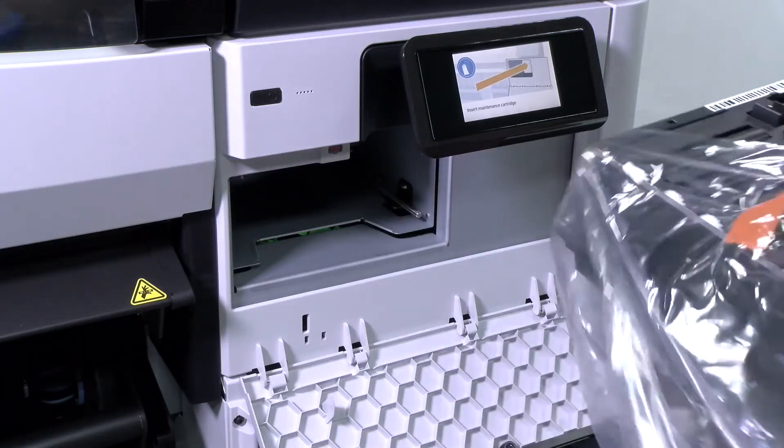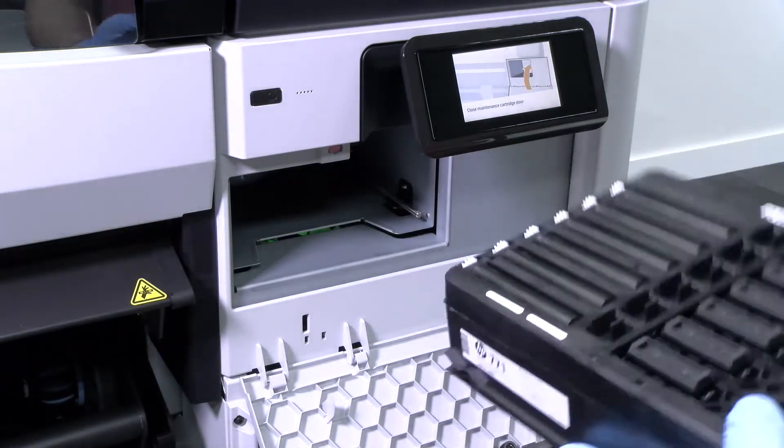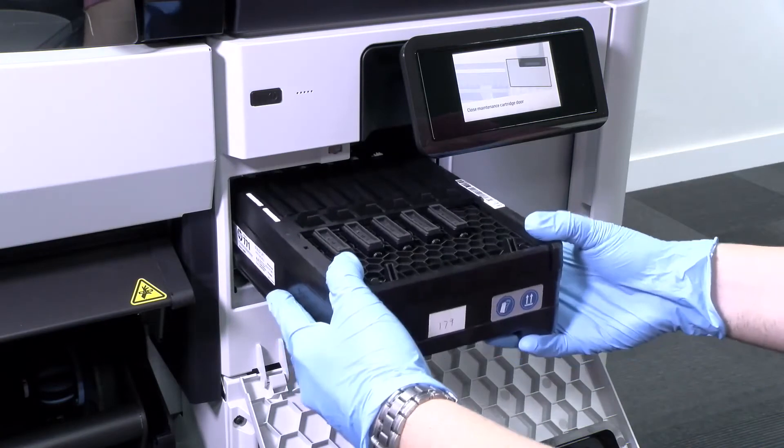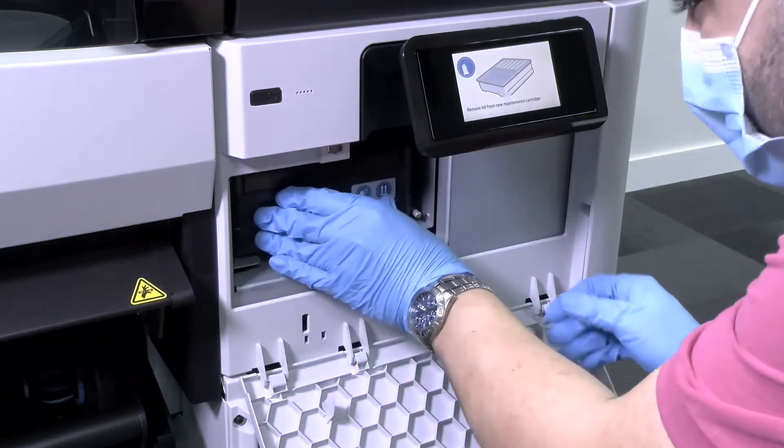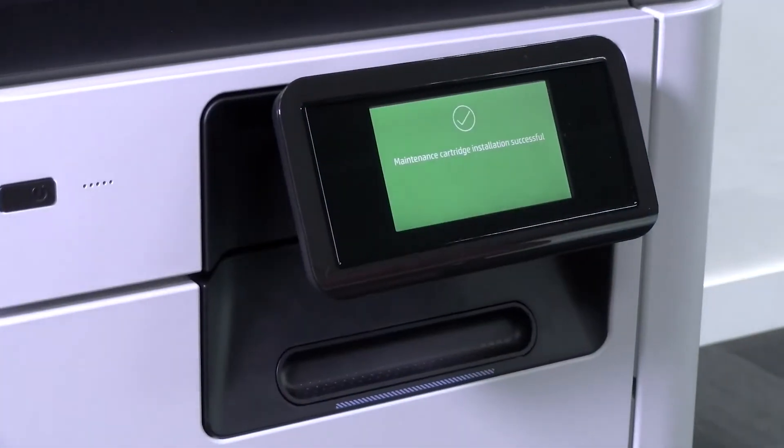Remove the plastic cover from the new maintenance cartridge. Insert the new maintenance cartridge into the slot. When you have inserted it into the printer, close the door. A message on the front panel will confirm that the maintenance cartridge has been successfully installed.